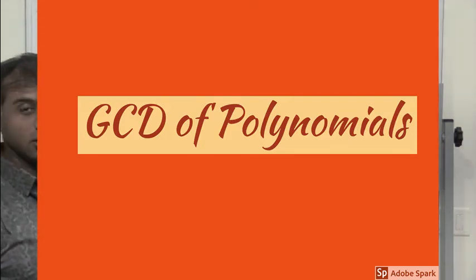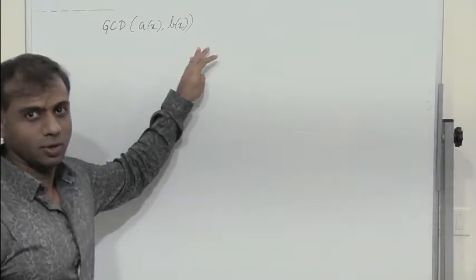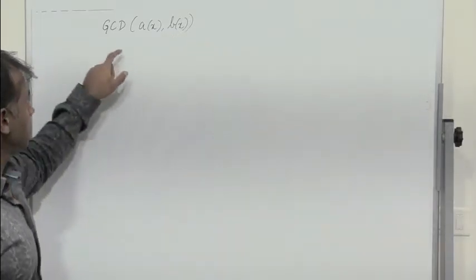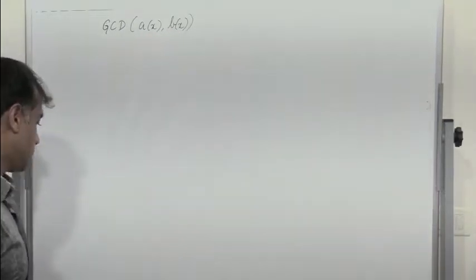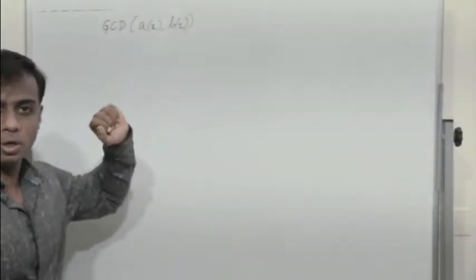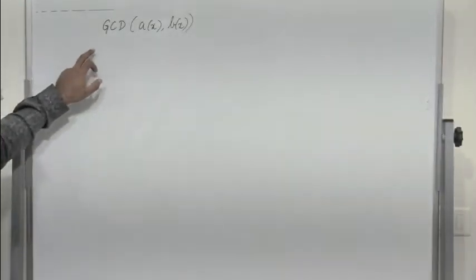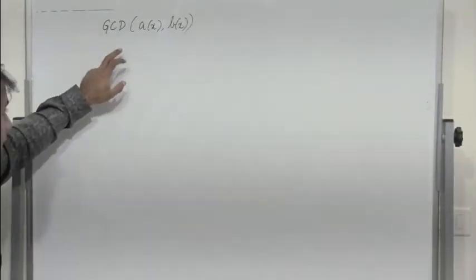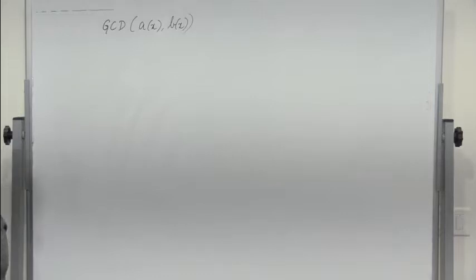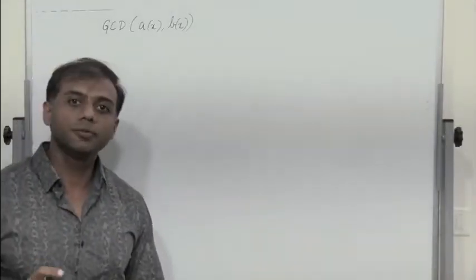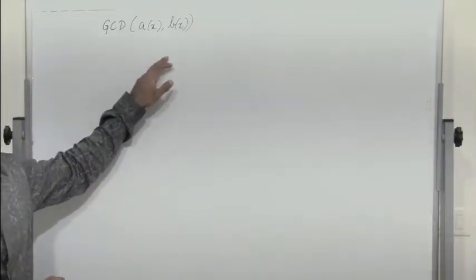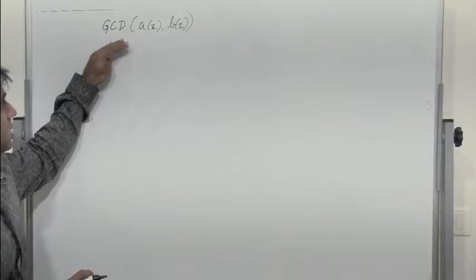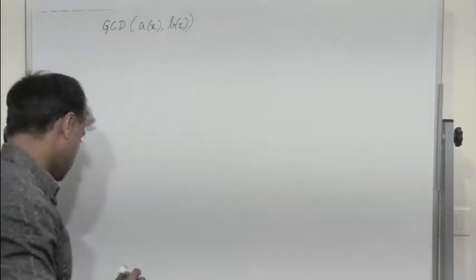In this session, let us try to find the GCD of two polynomials, A of x and B of x. How do we define the GCD of the polynomial A of x and B of x? It is defined as a polynomial of maximum degree that divides both A of x and B of x.